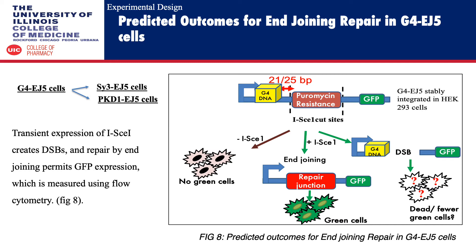Figure 8 illustrates the three predicted outcomes for end joining repair in G4-EJ5 cells. In the absence of I-SceI, no green cells are produced. In the presence of I-SceI, one of two outcomes is possible: first, successful end joining takes place resulting in repair of the double strand break and producing green cells; or the other outcome is unsuccessful end joining, possibly due to the presence of G4 DNA, that would result in either dead or fewer green cells. This is analyzed using flow cytometry.